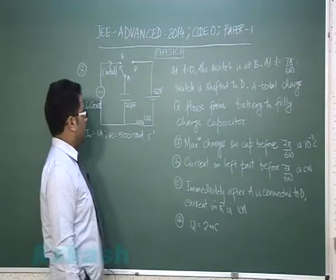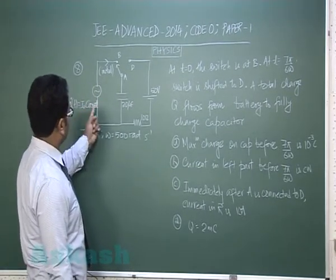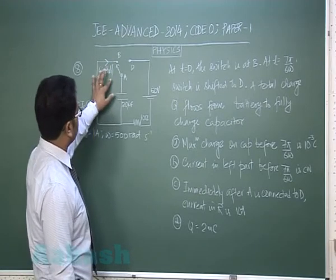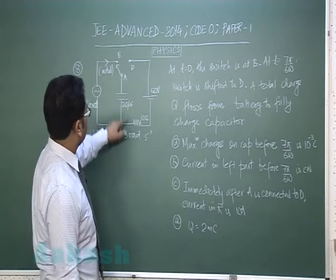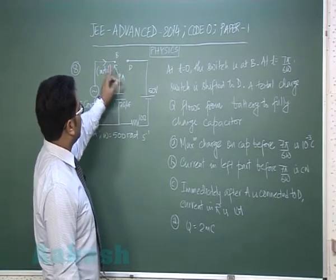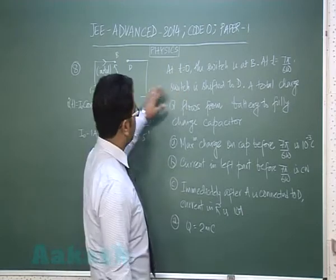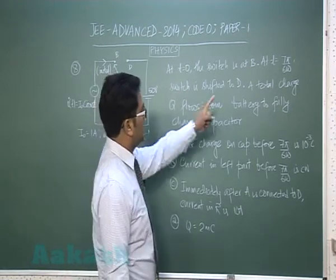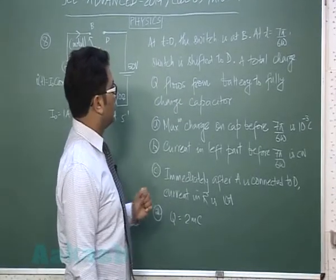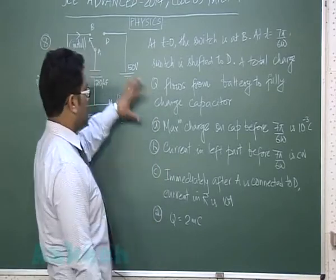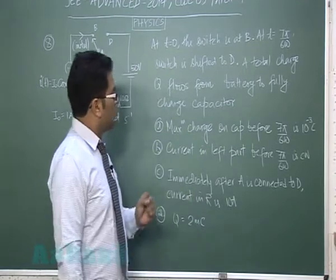Question number 8 is from alternating current. A current supply given as I-naught cos(omega t) in a clockwise direction is provided. The switch is initially at A connected to B, with given values of I-naught and omega. The switch moves to B at t equals 0, and at t equals 7pi by 6omega the switch is shifted to D. A total charge Q flows from the battery to fully charge the capacitor.